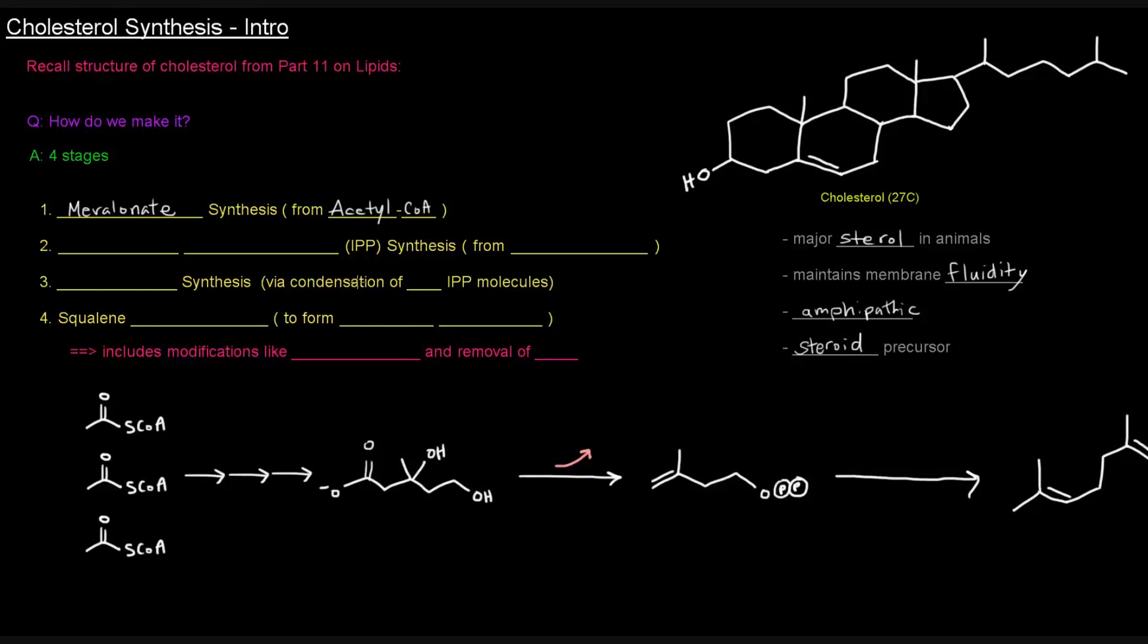So here, we're starting off with three acetyl-CoAs. Each one is two carbons long, and we're going to take them and combine them together to make this molecule here, which is mevalonate, which is six carbons long. So all three of these two carbon molecules will come together to make mevalonate.